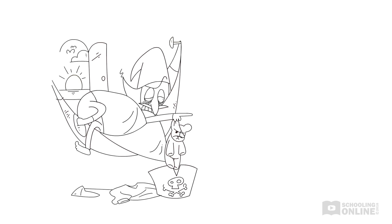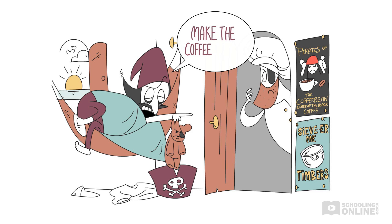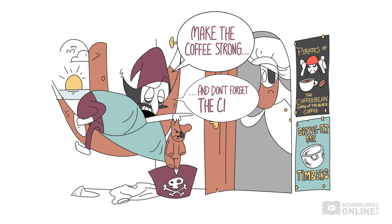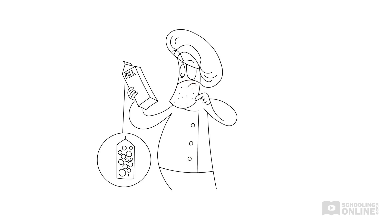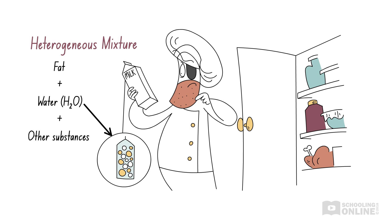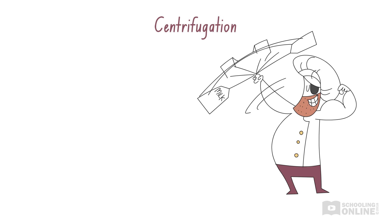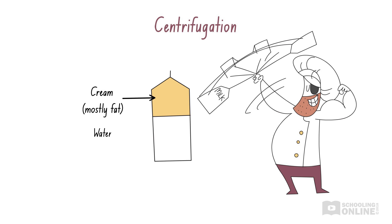Let's return to the pirate ship. The sun is rising and Blackbeard tells Cookie, the ship's chef, to make the morning batch of coffee. Blackbeard likes his coffee brewed strong, with cream on top. Cookie takes out a carton of long-life milk. Milk is a heterogeneous mixture containing fat, water and other substances. Cookie can use centrifugation to separate the milk into layers. After spinning the milk around several times, the less dense fat particles float on top to be collected as cream, while the more dense substances including water sink to the bottom of the container.